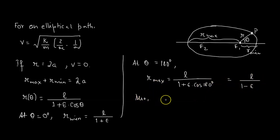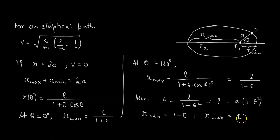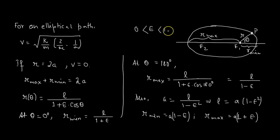We have the expression for a defined as l / (1 - ε²), or in terms of l: l = a(1 - ε²). Substituting into r_min and r_max gives r_min = a(1 - ε) and r_max = a(1 + ε). For an elliptical path, the eccentricity lies strictly between 0 and 1 — not exactly 0 (circle) or 1 (parabola). These expressions confirm that r can never exactly equal 2a, so velocity can never exactly reach 0.